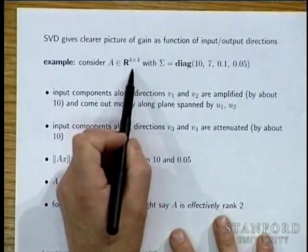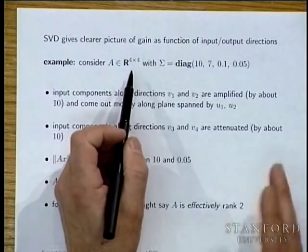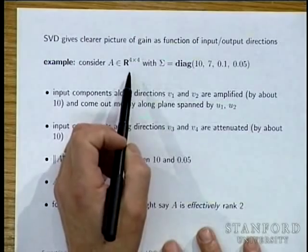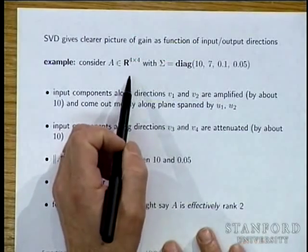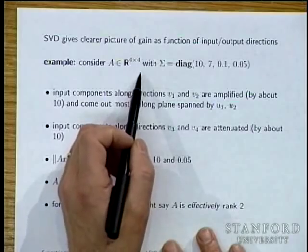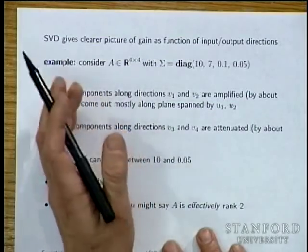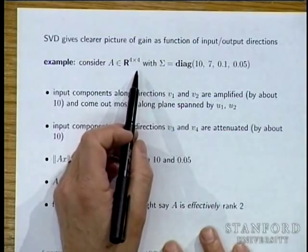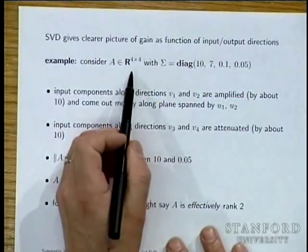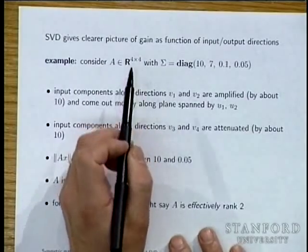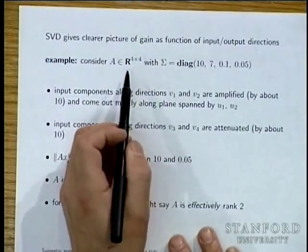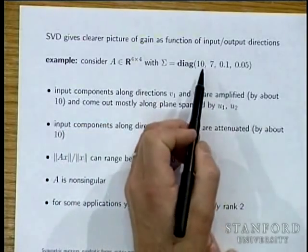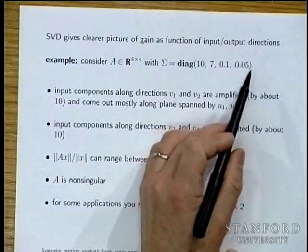Take a 4×4 matrix with singular values 10, 7, 0.1, and 0.05. The rank of A is 4 — there are four singular values — so U, V, and Σ are all 4×4. The gain varies from as small as 0.05 to as large as 10, a 200-to-1 ratio.